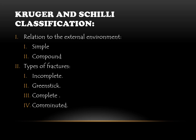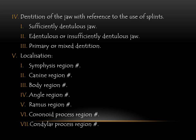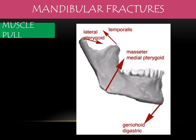The Kruger and Schilli classification is a comprehensive classification combining previous ones. In relation to the external environment, fractures are classified into simple and compound. Depending upon the type, they can be classified into incomplete, greenstick, complete, or comminuted. Depending upon dentition: sufficiently dentulous jaw, edentulous or insufficiently dentulous jaw, or primary or mixed dentition. Depending upon localization, it is divided into symphysis region, canine, body, angle, ramus, coronoid, and condylar region.